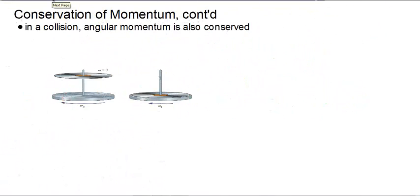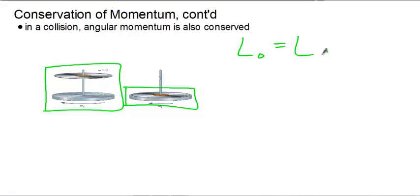If you have a collision, angular momentum will still be conserved depending on how you define your system. So in this case our system will be these two plates right here. Now they are separate at first and then they are together here. Still that is our system. There are no outside forces acting on it.